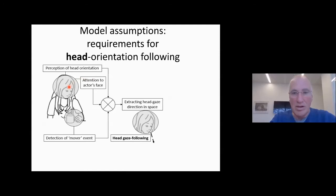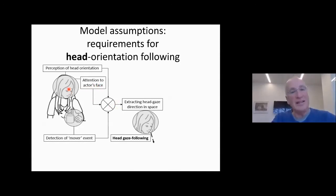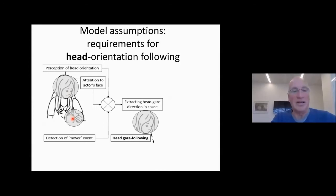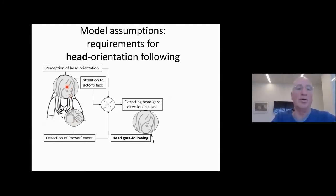To understand gaze based on head information, you first need to perceive the head orientation, and you need to attend to the actor's face in order to perceive this. You also need to detect the mover event — here's a hand grasping the cup. You want to capture the hand grasping the cup, and at the same time pay attention to where the head was pointing. Using these three elements, you can extract head gaze direction in space and follow the gaze of others.